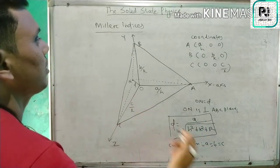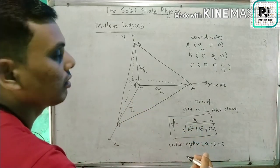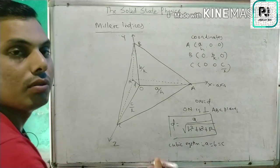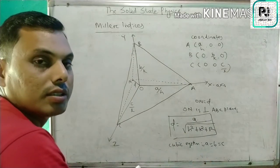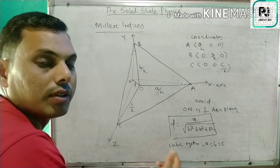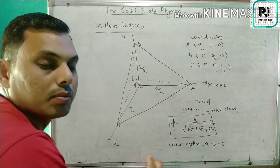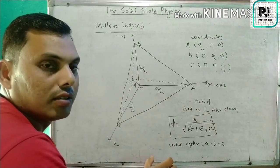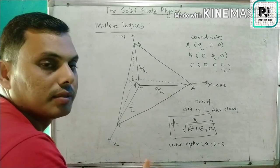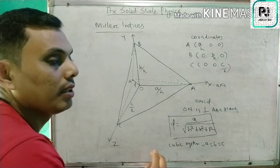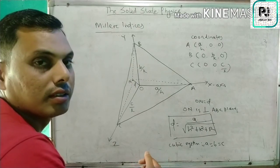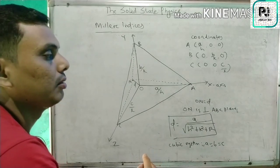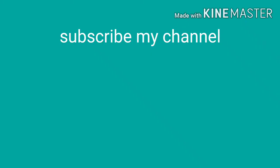So these are the fundamental ideas about Miller Indices. Here we learned: what Miller Indices mean, how to find them, what H, K, and L are, what the distance between two planes is, and how to calculate that distance D for different planes. Thank you for watching this video.